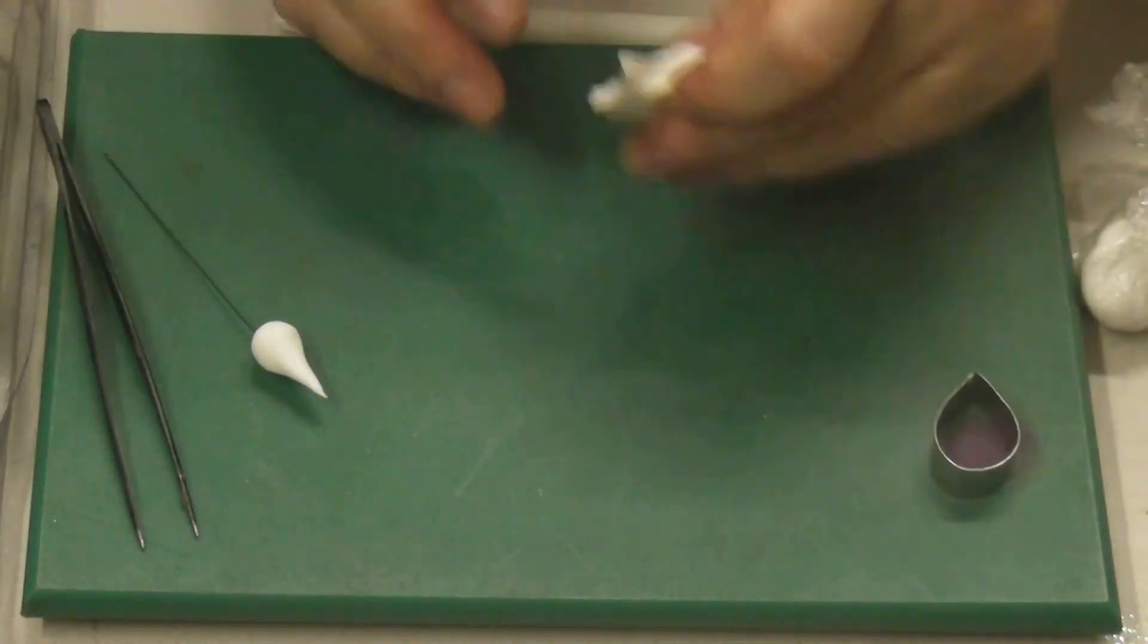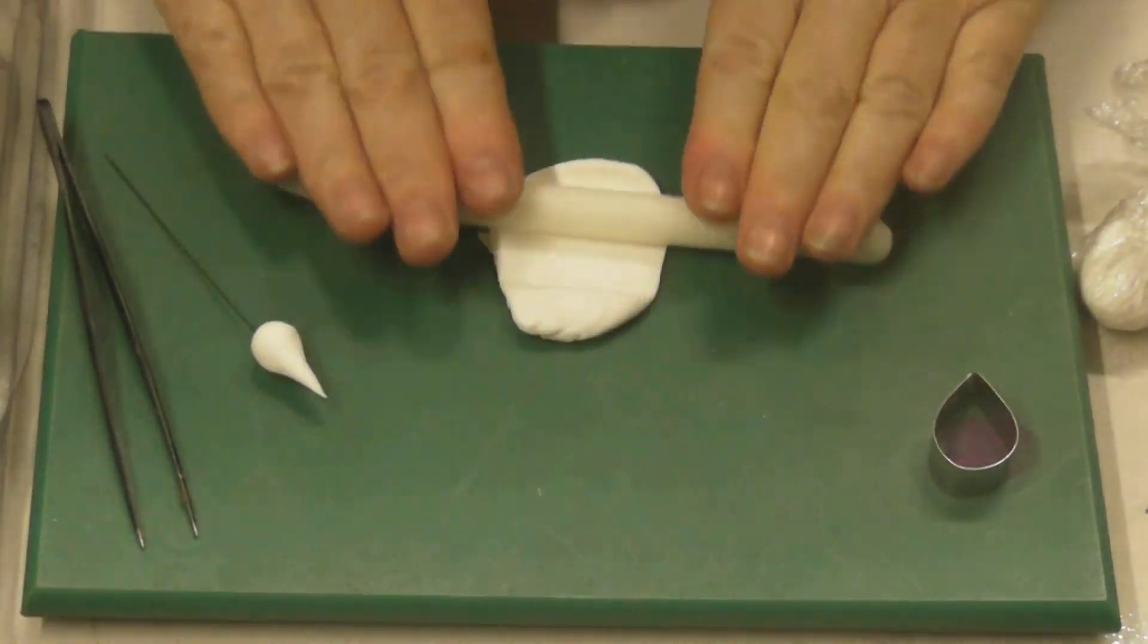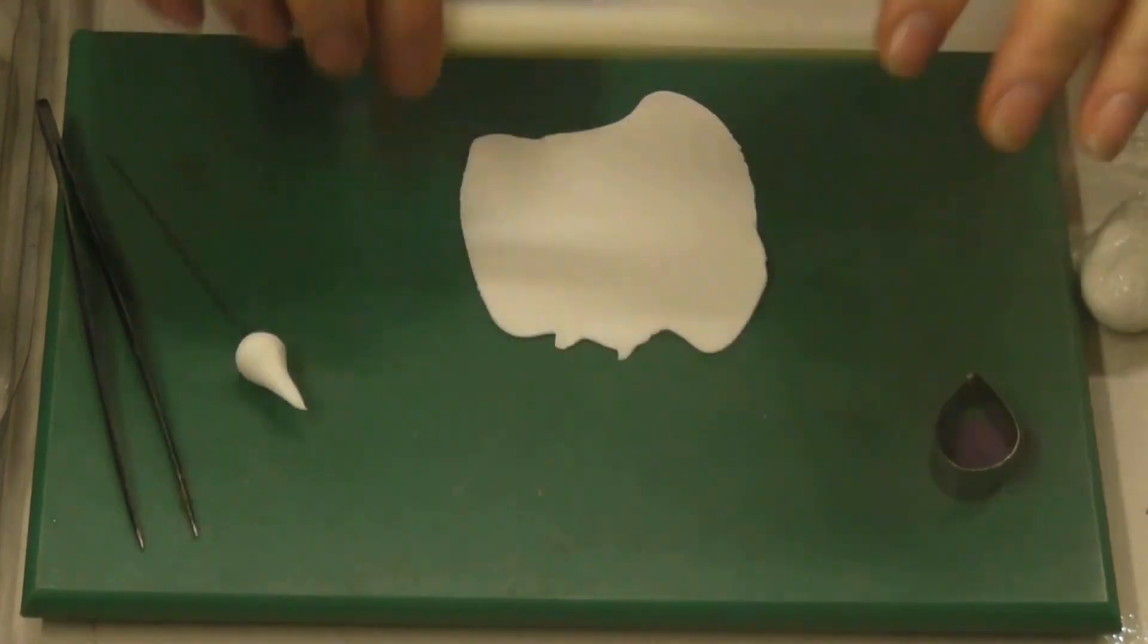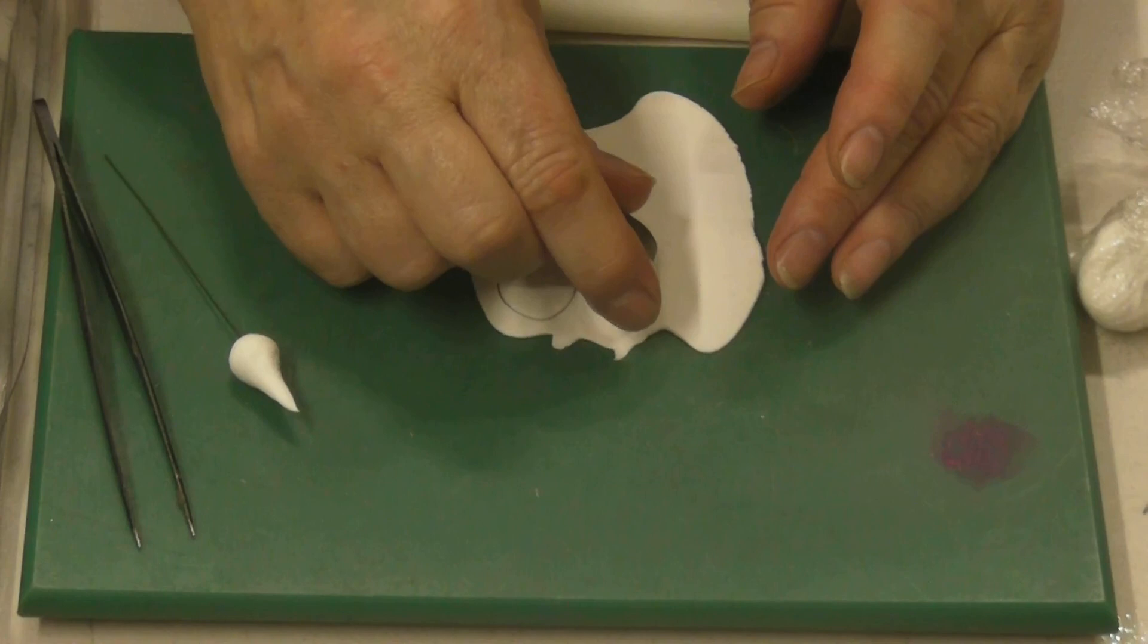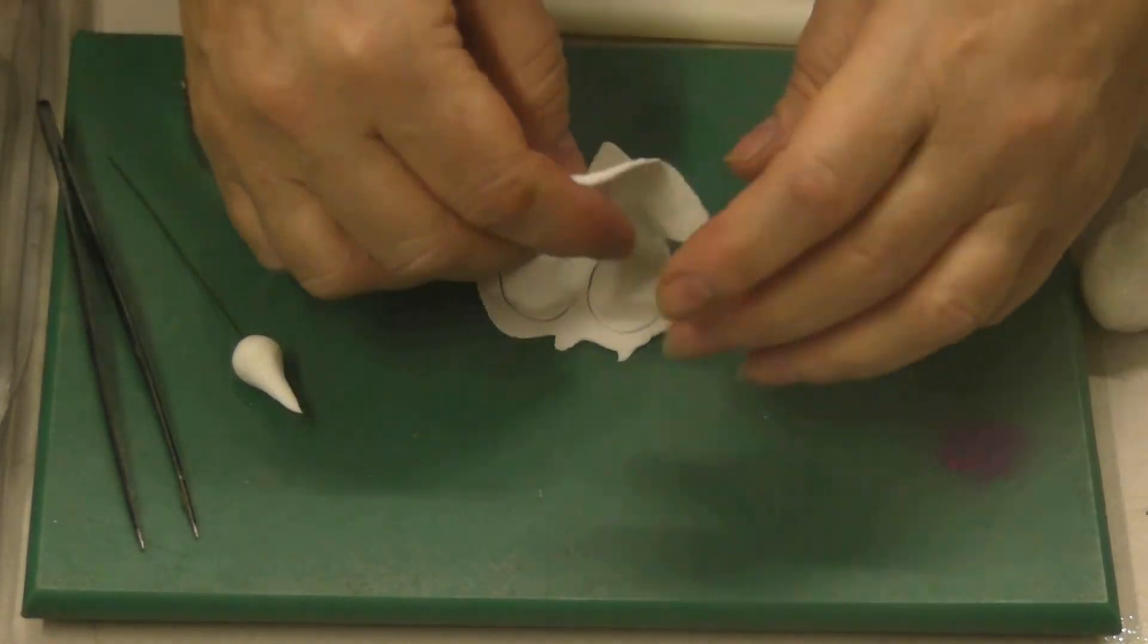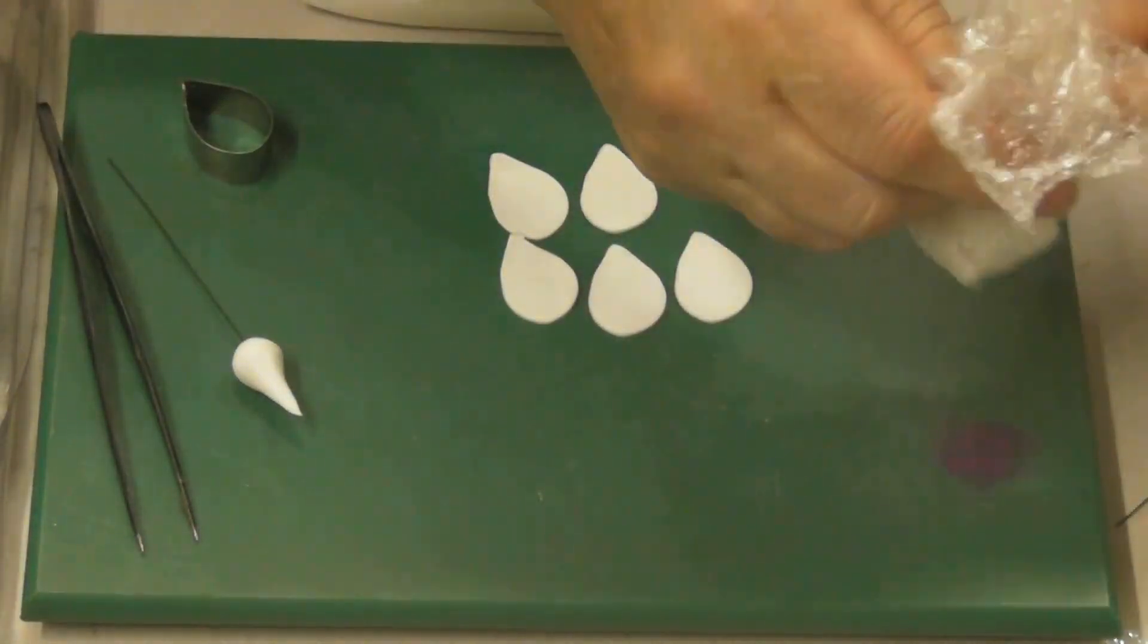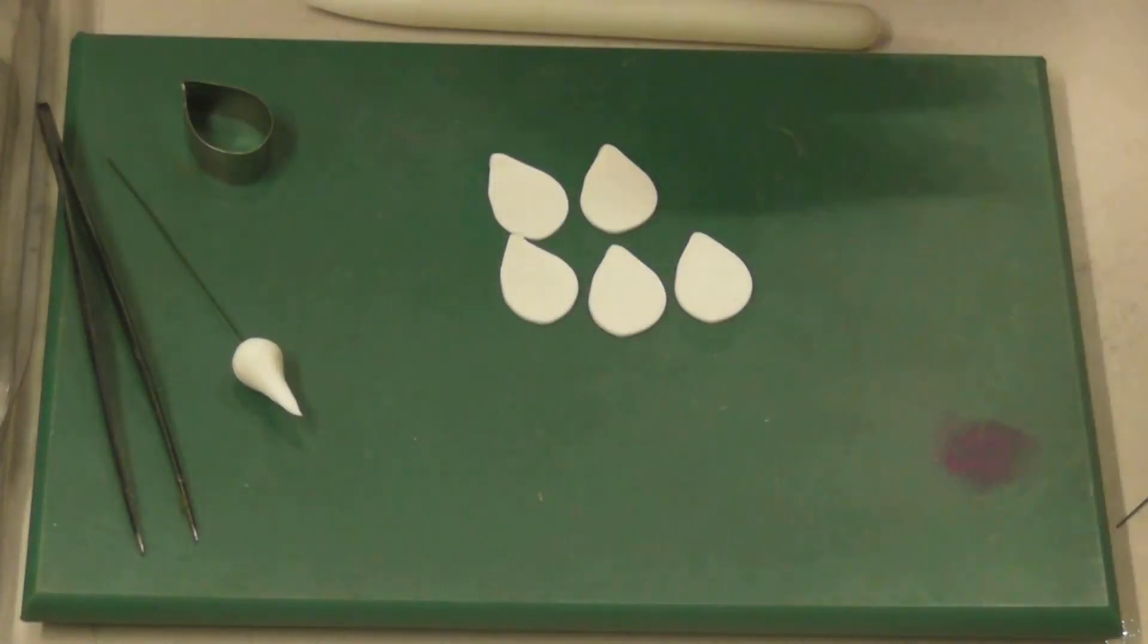So what we're going to do is roll it out. I do keep it wrapped in cling film to stop it from drying out. Just roll it out quite thinly, and then we're going to cut about five of these. I'm going to just take the remainder of the clay, roll it up, and put that in there just to keep it nice and fresh.